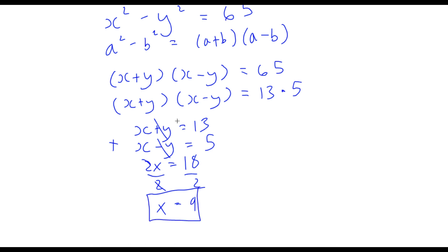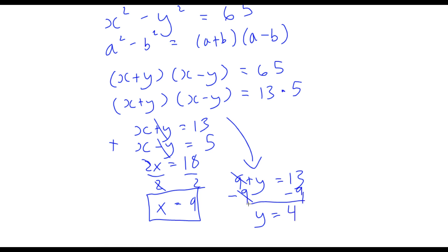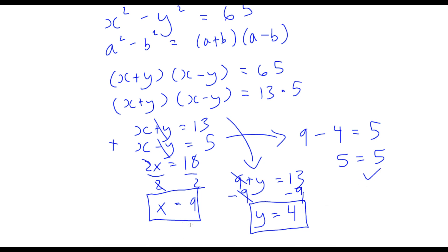So our value for x is 9. Now let's find y by plugging x into the first equation. x plus y equals 13 — plugging in 9 for x gives 9 plus y equals 13. Subtracting 9 from both sides, y equals 4. To check, plugging into the second equation: 9 minus 4 equals 5, and 5 equals 5 — correct. So x equals 9 and y equals 4 are the right values.